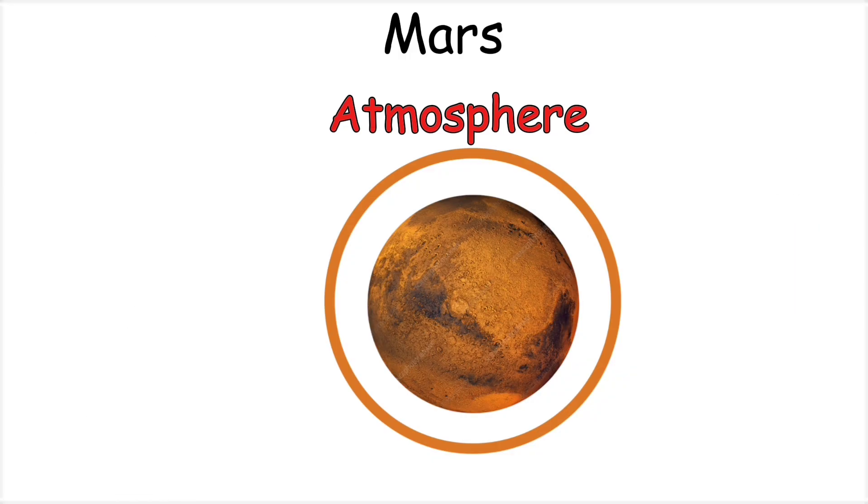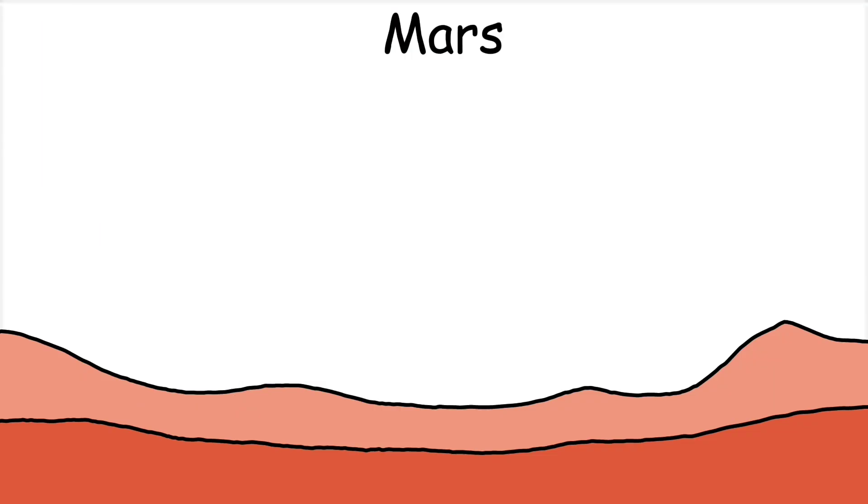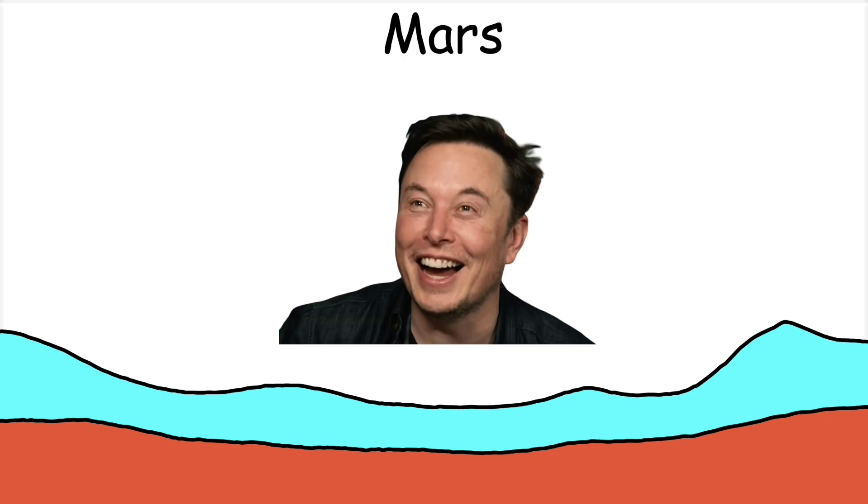Because the atmosphere is so thin, harmful radiation directly reaches the surface, and it cannot fully block UV rays. Another big challenge is water. Liquid water cannot remain stable here. Instead, it either evaporates quickly or freezes into ice. Still, Elon Musk is determined to work on Mars despite all these challenges.